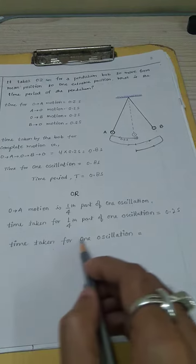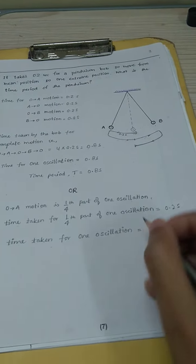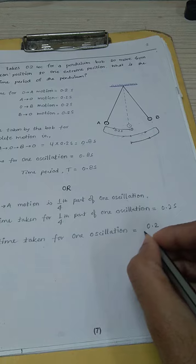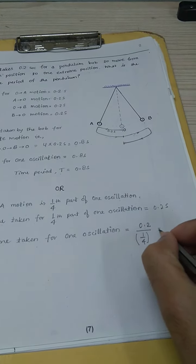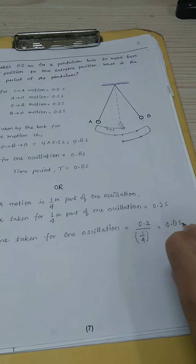Now the time taken for one oscillation, from unitary method, you get 0.2 divided by one fourth, which equals 0.8 seconds.